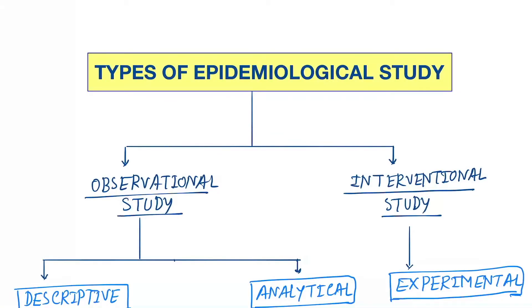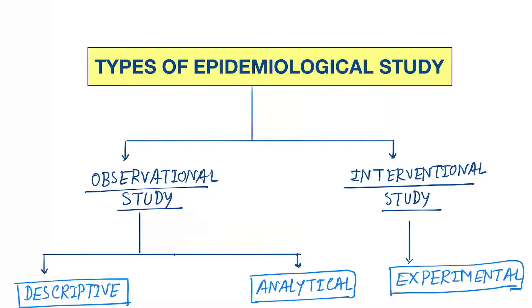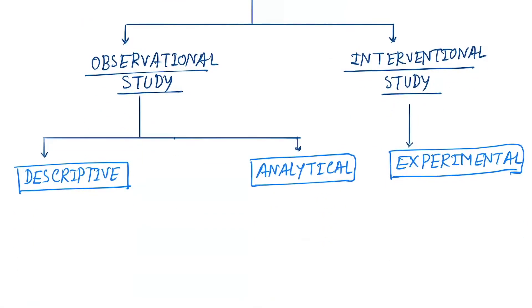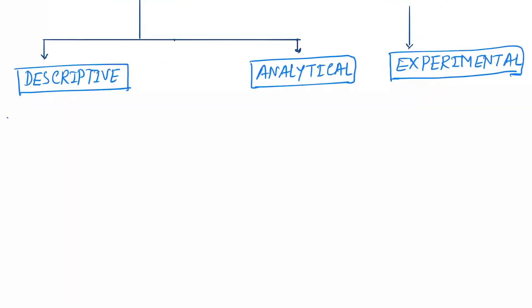Okay, so hello friends. Today our topic is the types of epidemiological study. So first they are classified as two. First one is the observational study and second one is the interventional study. Next, observational study is of two types: descriptive and analytical. Interventional study is experimental.